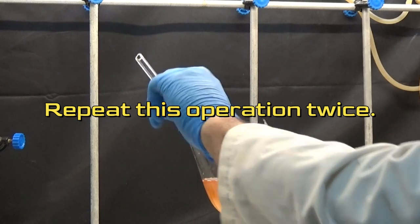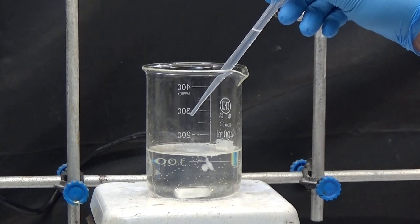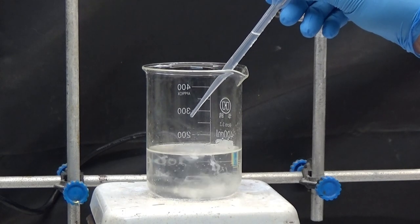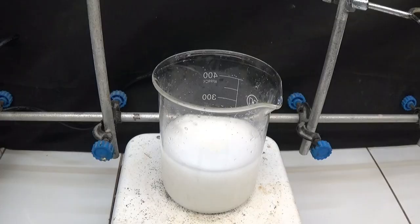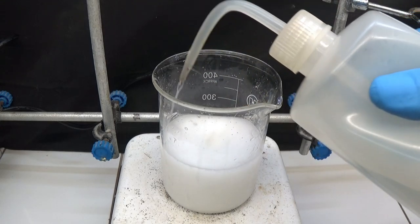Repeat this operation twice. The aqueous sodium phenylacetate solution is cooled with ice and acidified with concentrated hydrochloric acid to pH 2.